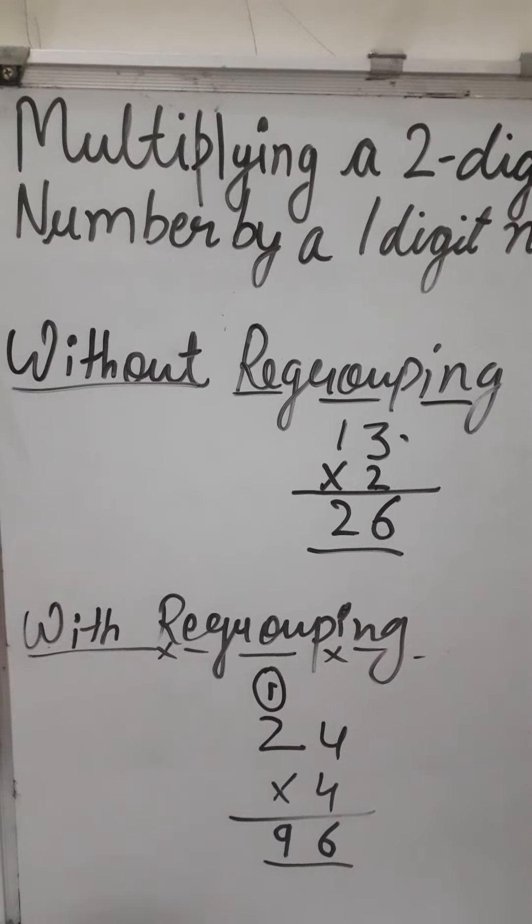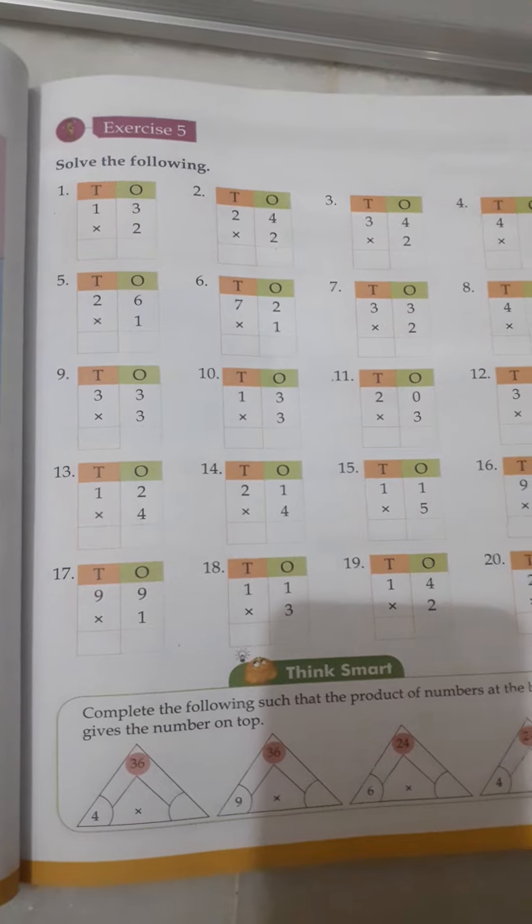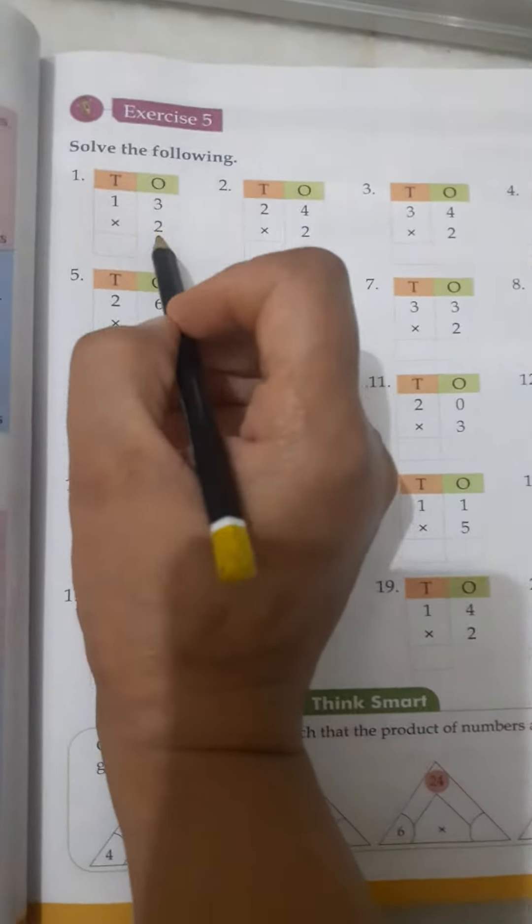So let's start the exercise part. First of all we will do the exercise 5, and it is without regrouping. So let's generally calculate these questions.